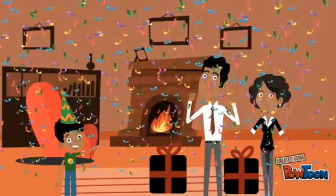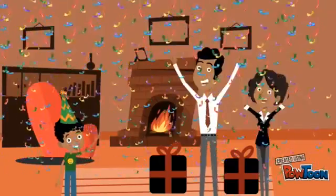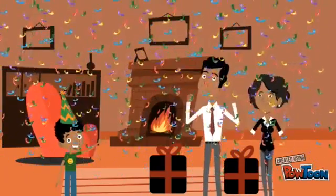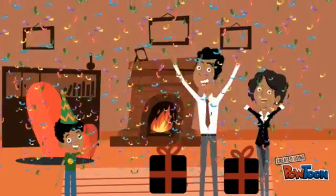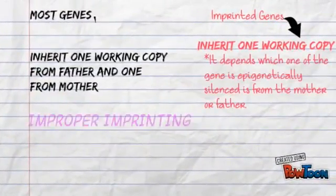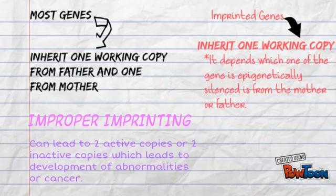Genomic imprinting is the phenomenon by which certain genes are expressed in a parent-of-origin-specific manner. If the allele inherited from the father is imprinted, it is thereby silenced, and only the allele from the mother is expressed. Most genes inherit one working copy from the mother and one from the father, but imprinted genes inherit one working copy, and it depends which one is epigenetically silenced — whether it's from the mother or the father.